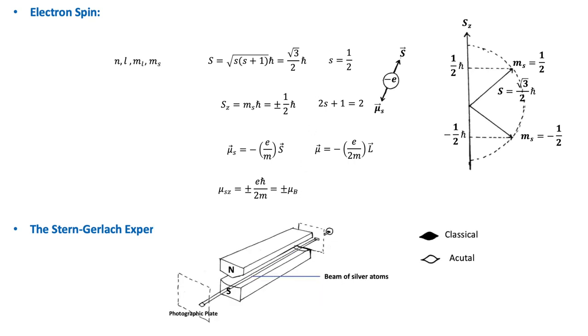This space quantization was first demonstrated in 1921 by Stern and Gerlach, and they used a beam of neutral silver atoms from an oven here, and it was directed through a set of slits through an inhomogeneous magnetic field.